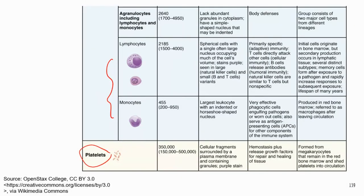Last one: platelets. Platelets are cellular fragments, but they are important in the clotting process. When there is a tissue injury — let's say there is blood vessel rupture or damage in the inner lining — the platelets will aggregate and form a temporary plug to block and seal the leak so that you don't lose blood. That's the main function for platelets.